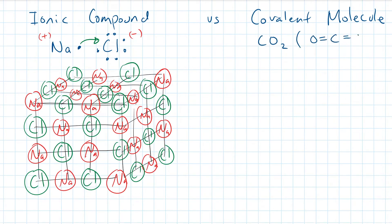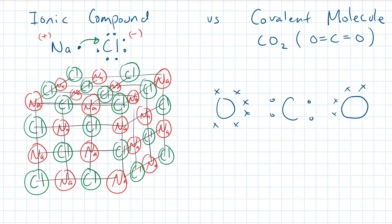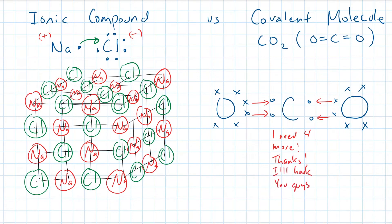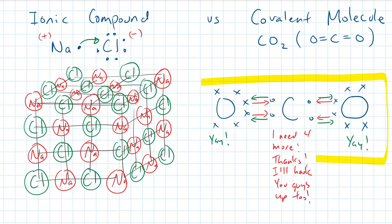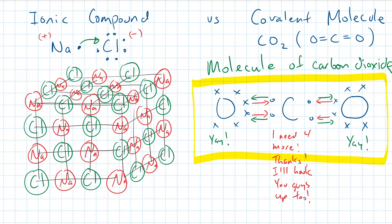Meanwhile, in covalent bonds, the electrons are routinely shared between the nonmetals. Since there is less of a charge imbalance, the nonmetals stay together to make their own pack. In chemistry, this is known as the formation of a molecule.